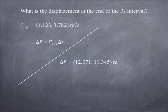So we can simply take the average velocity vector we had, multiply it by the 3 seconds, and out comes the displacement. Easy as pi.